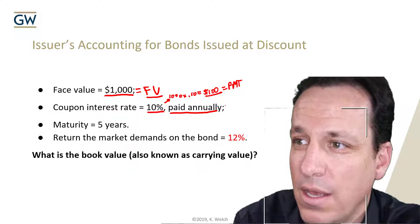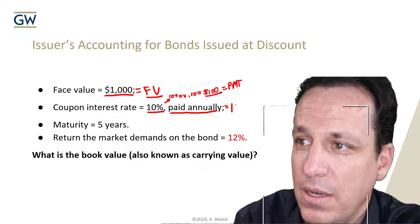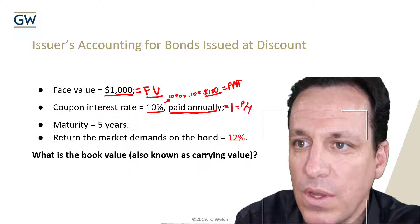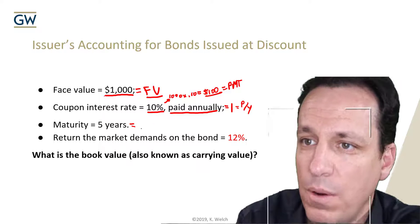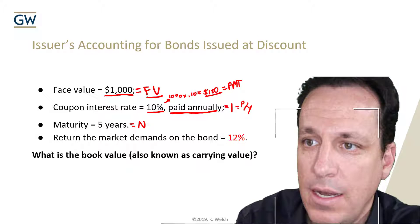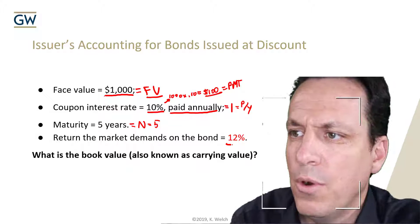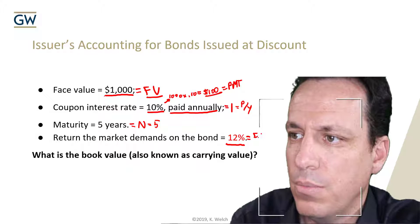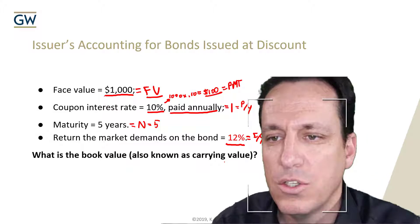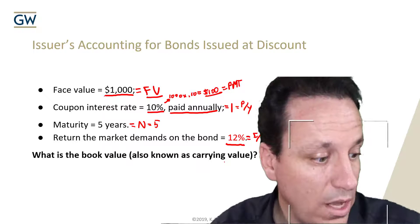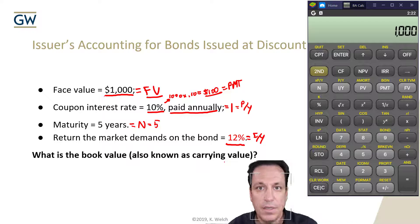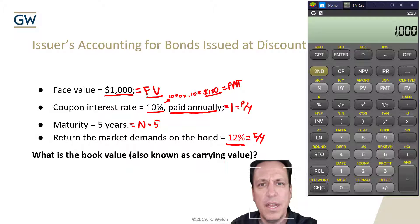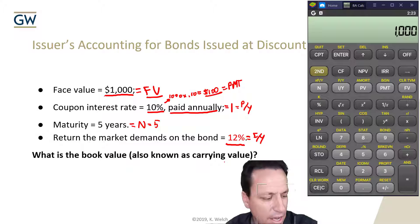The bond is paid annually, meaning there is one payment per year. Maturity is five years with one payment per year, which means N equals five. The return the market demands on the bond is 12% — that is the interest rate per year, I/Y. So what is the book value of the bond?